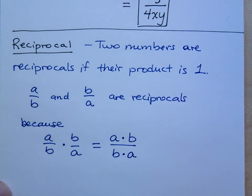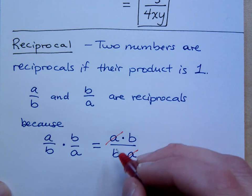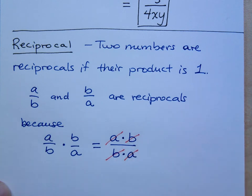If I do A over B times B over A, that's A times B over B times A. Can you reduce this? A over A would reduce, right? Wouldn't B over B reduce? And what would you be left with?